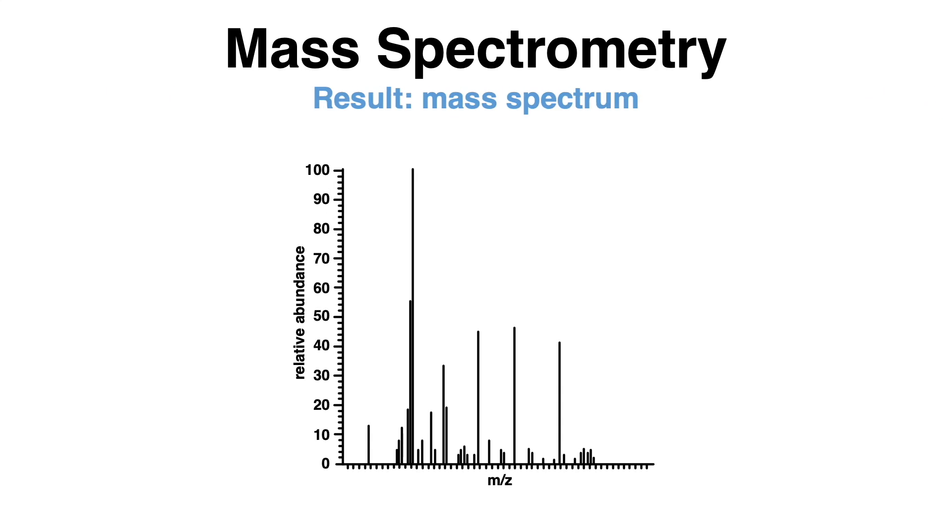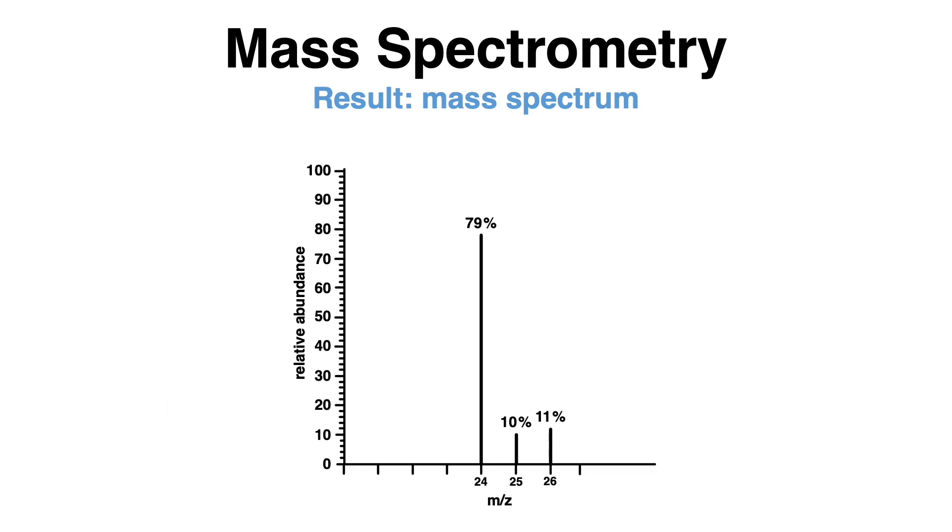The mass-to-charge ratio is displayed on the x-axis, and the relative intensity is shown on the y-axis. The most abundant ion, for example, will be the one with the highest peak. The relative intensity is set to 100% for that ion. In this example, the ion peaks at 24 m/z, and some lower peaks are found with an isotopic mass of 25 and 26 m/z.